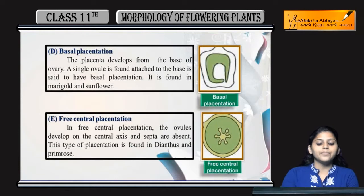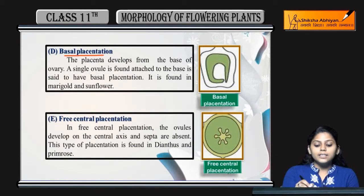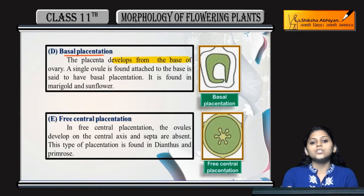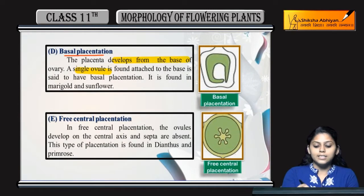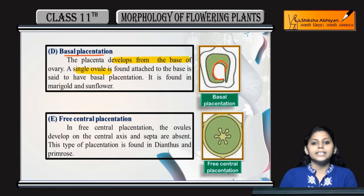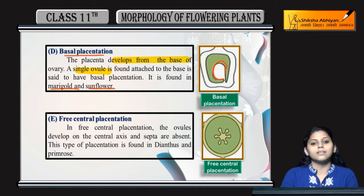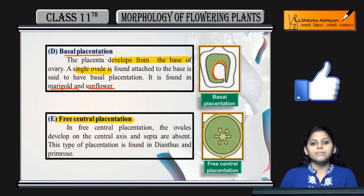Next is basal placentation. The placenta develops from the base of the ovary, and a single ovule is found at the base of that ovary. As you can see here, it arises from the base. It is found in marigold and sunflower.